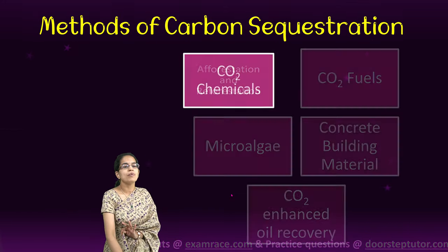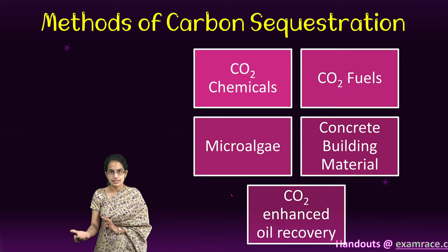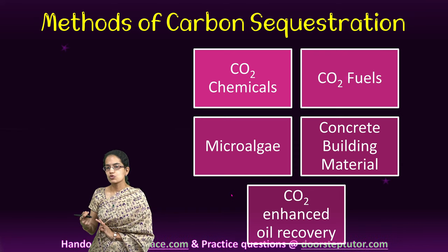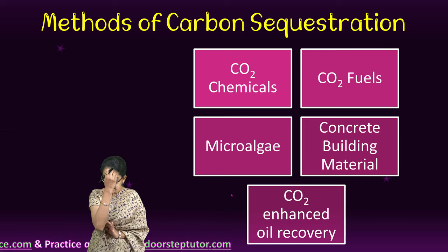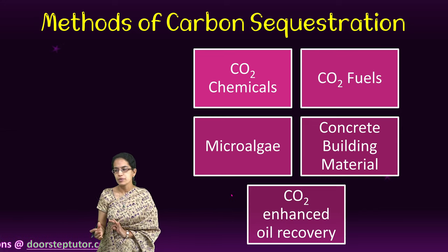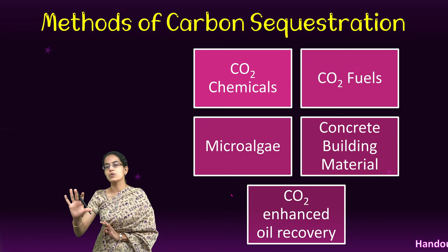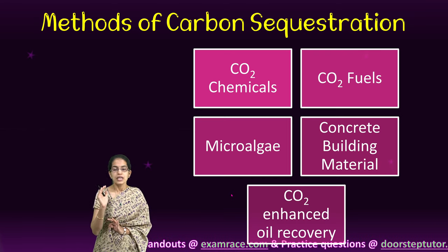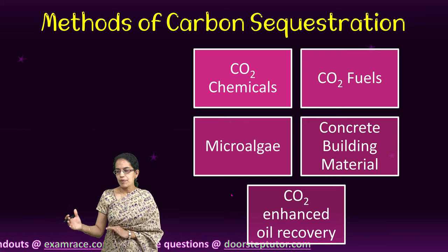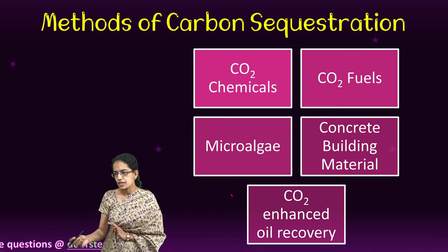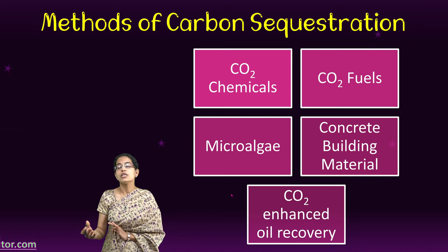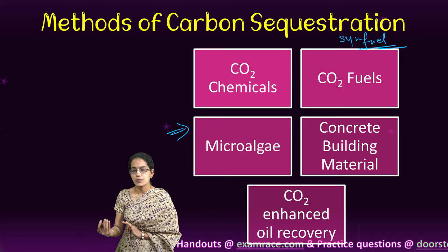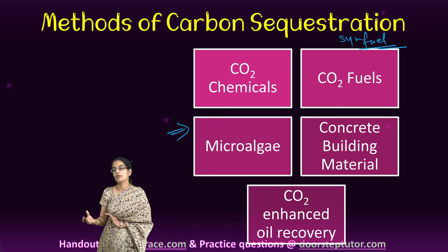Some less commonly heard methods also exist. Numerous chemicals have carbon dioxide as a constituent — for example, methanol and urea — so creating more of these chemicals is one way to prevent free carbon dioxide from entering the atmosphere. Another method is using carbon dioxide as a fuel: combining hydrogen with carbon dioxide to produce methanol, syngas, or synfuel, which are good ways to reduce atmospheric carbon dioxide.